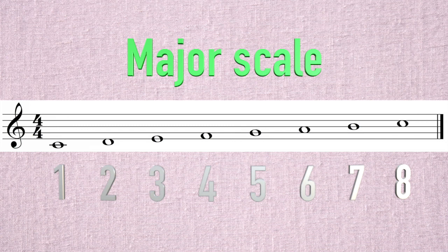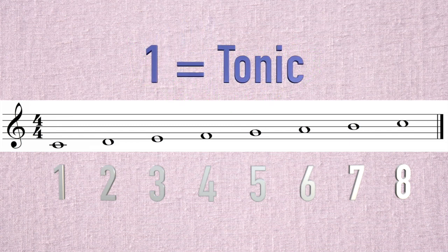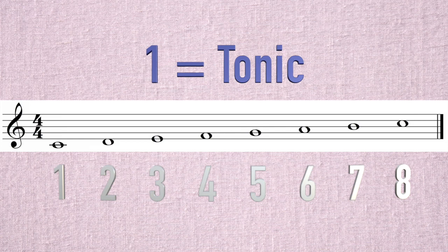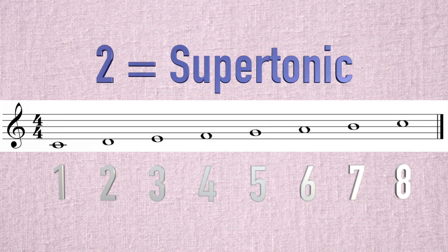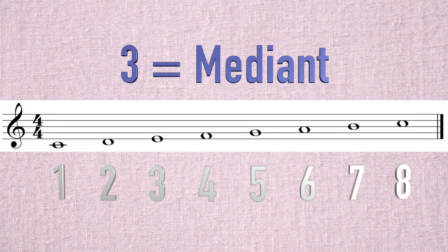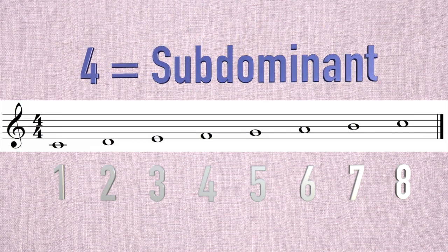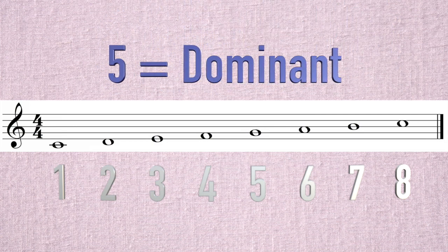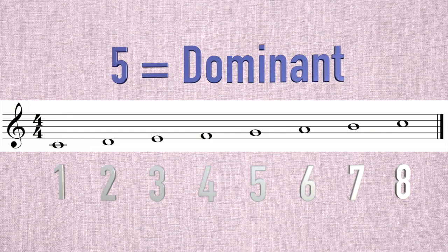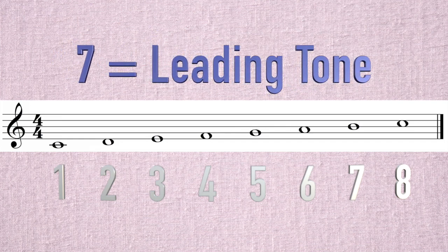We also refer to each step of the scale with specific names that will come to have reference to their harmonic functions as we learn how chords move. The first step is called the tonic — the most important. The second step is the supertonic, because it is above the tonic. The third step is the mediant. The fourth step is the subdominant. The fifth step is the dominant — the most important aside from the tonic. The sixth step is the submediant, and the seventh step is called the leading tone.